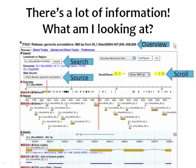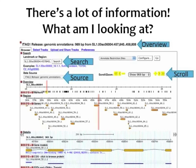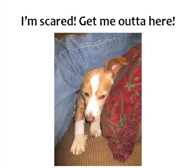On the top line, what I've labeled as the overview, this shows a string of information: it says I-tag release, genomic annotations, 969 base pairs from a scaffold of Solanum lycopersicum. We searched for a region and selected a source, which I'll go over in more detail in the second half of this presentation. One of the key functions is the scroll tool, which allows us to scroll back and forth throughout the region of the scaffold or genome we're looking at, and also to zoom in or out to see more or less of a scaffold at one time.